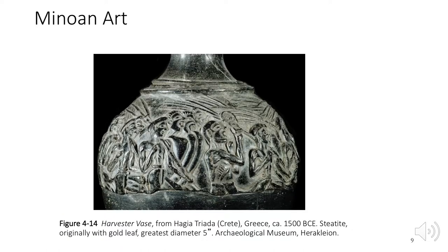Only the top portion of this piece, called the Harvester Vase, remains; the rest pictured here is a reconstruction. This is an example of Minoan relief sculpture. Remember, relief sculpture means that the work stands out in relief to a flat surface — it projects off a surface rather than standing freestanding in the round. We see a crowd of harvesters singing and shouting as they go to or return from the fields. This is quite a contrast to the stiff and static forms depicted in Egyptian art of the time.